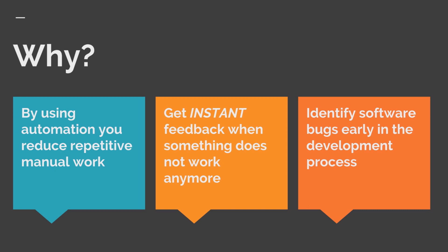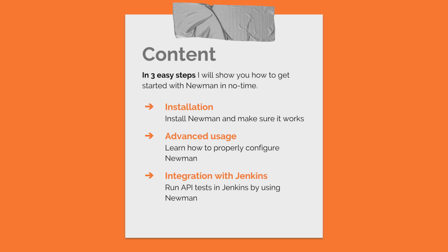A second benefit is that when you're doing automation, you will get instant feedback when something does not work anymore. If you have API tests in place and the Postman collection is executed every time a developer makes a change to the code, you'll know very quickly — maybe within minutes of a commit — that something went wrong. Third, you will be able to identify software bugs very early in the development process. There's no need to deploy to a test or pre-production system if you can already identify bugs early, keeping them off the production server.